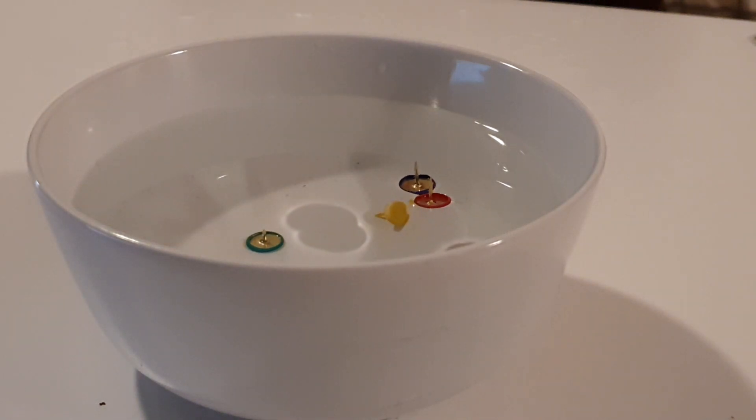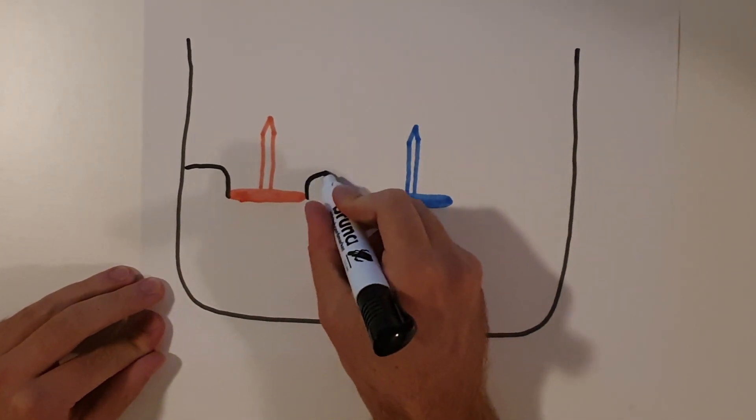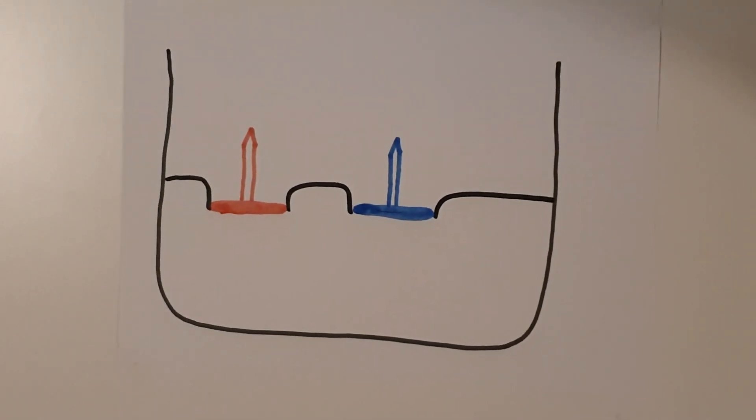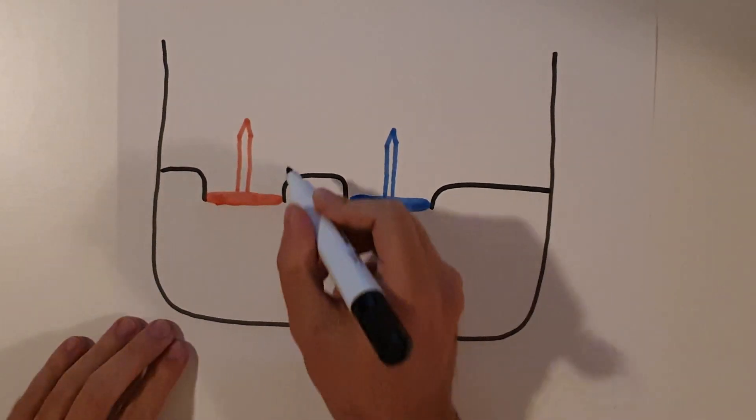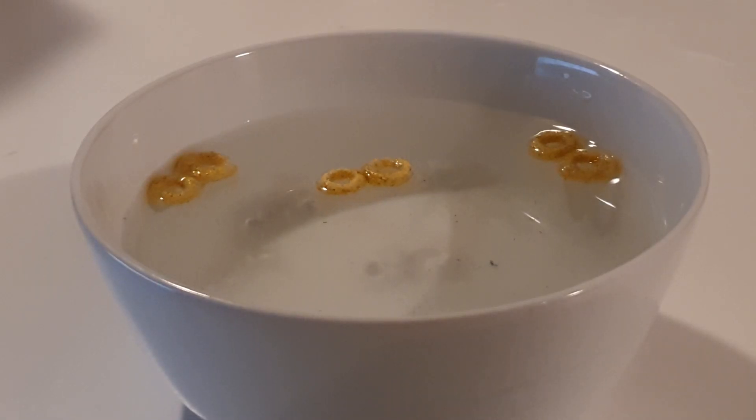Interestingly, like the Cheerios, the drawing pins are attracted to each other. Opposite to the Cheerios, a drawing pin will create a little hole on the surface, in which it floats. A second drawing pin, placed nearby, will look for the lowest point and fall into this hole.